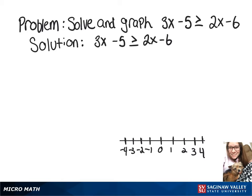So our first step here is going to be to subtract 2x from both sides. So now we have x minus 5 is greater than or equal to negative 6.